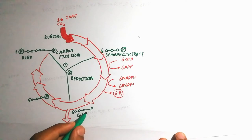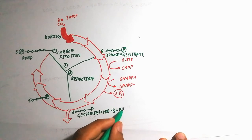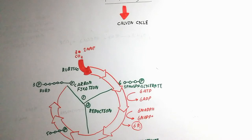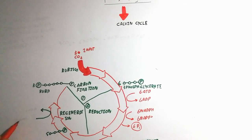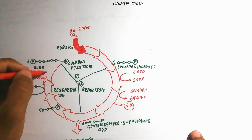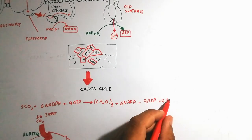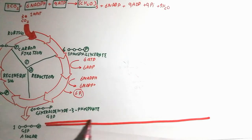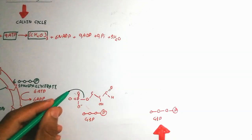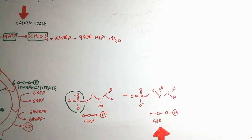Six G3P molecules are produced. One molecule is drawn off as output; the remaining five G3P molecules re-enter the cycle for regeneration. In the regeneration phase, three ATP are used to regenerate three RuBP molecules, which restart the cycle. The overall equation uses three CO₂, six NADPH, and nine ATP to produce G3P.